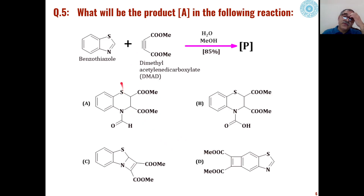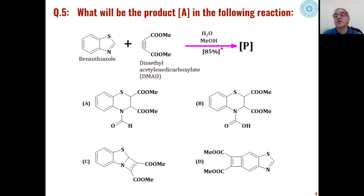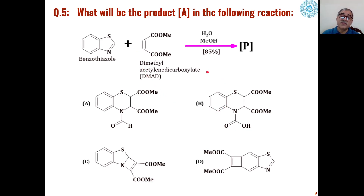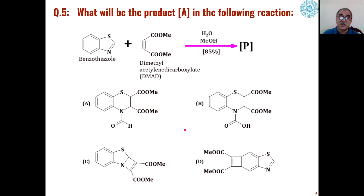The fifth and last problem is how benzodiazole reacts with DMAD, that is dimethylacetylene dicarboxylate, under aqueous methanolic conditions. This is a very interesting reaction where these two can undergo addition reactions to give us different types of products, and out of these four, one product will be formed. We will see the mechanism of the reaction.